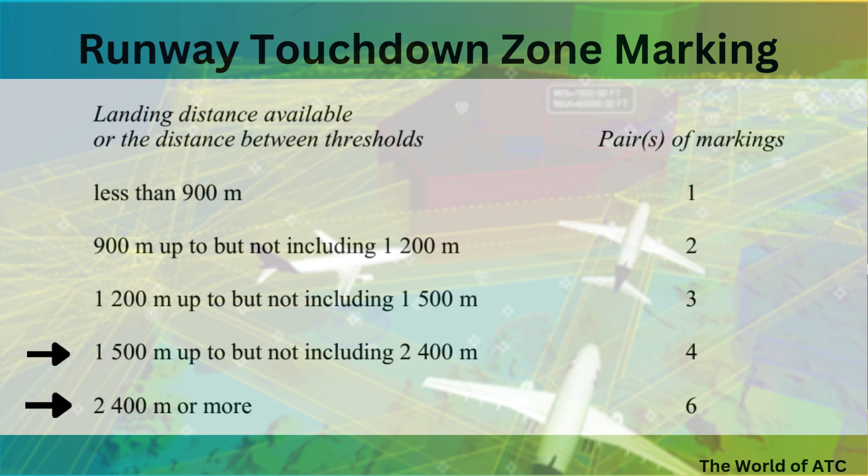However, if the landing distance is 2400 meters or more, there would be six pairs of markings in the touchdown zone.